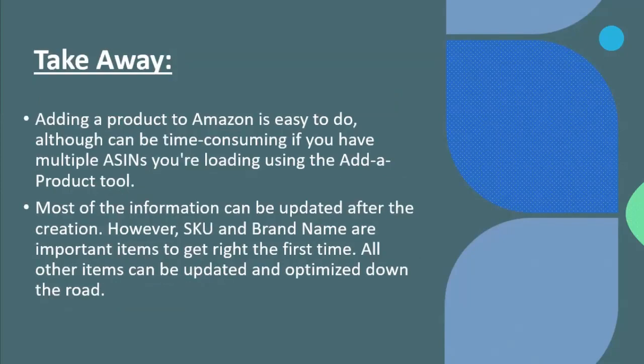Adding a product to Amazon is easy to do and Amazon helps with the process, but it is time consuming. A good amount of the information can be updated after the creation, so you do not have to get everything right the first time - all other items can be updated and optimized down the road. I hope this covered the topic of how to load a listing on Amazon. Thank you.